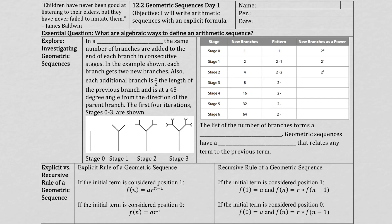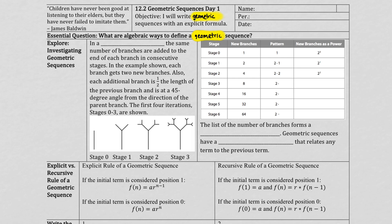Before I start, make sure you have these notes already with you so you can follow along. When I was writing these notes, I was still stuck on arithmetic sequences and forgot to update the wording. So let's do that right now. In the objective, cross out 'arithmetic' and change it to 'geometric' — same thing in both the essential question and in the objective. Now we can continue.